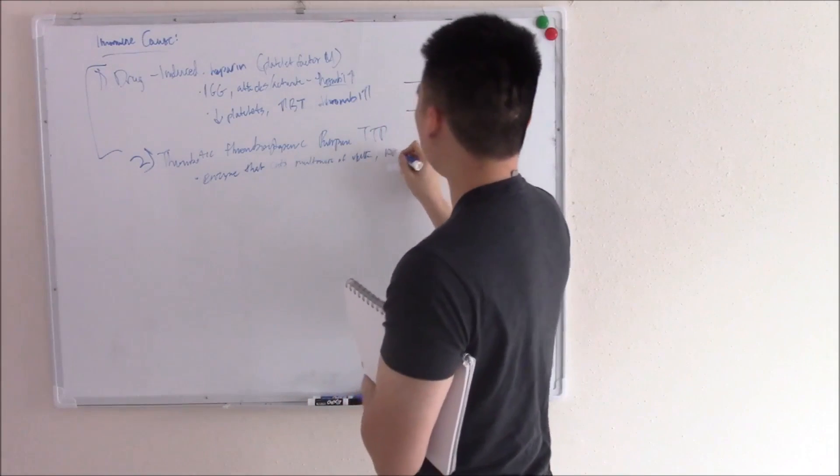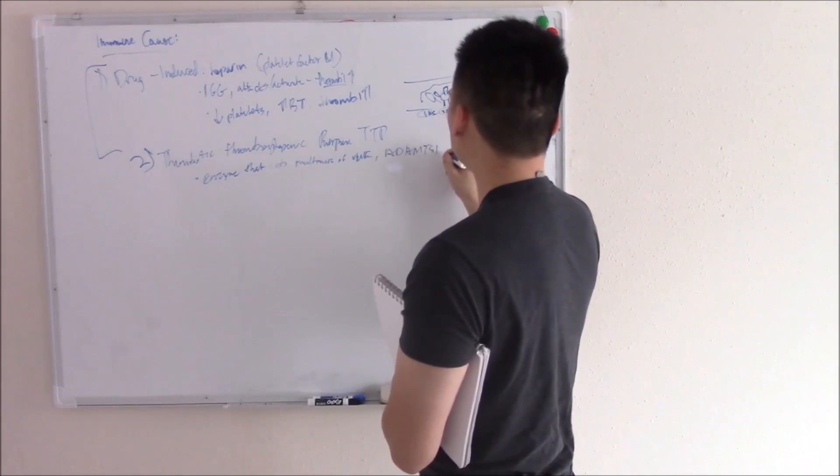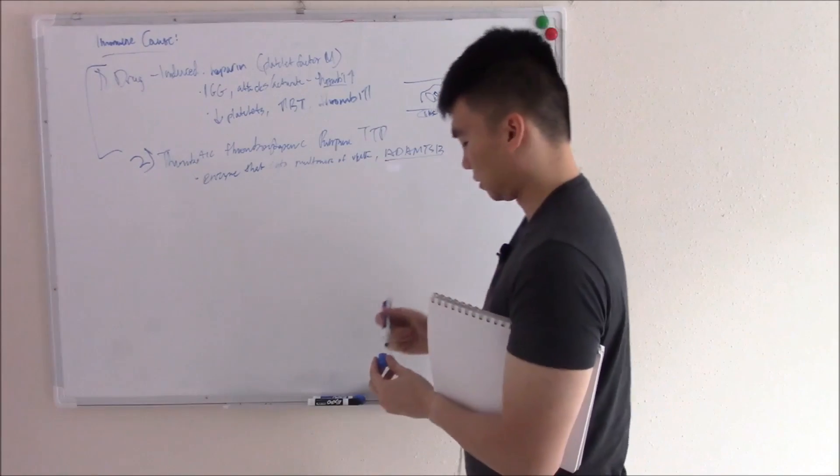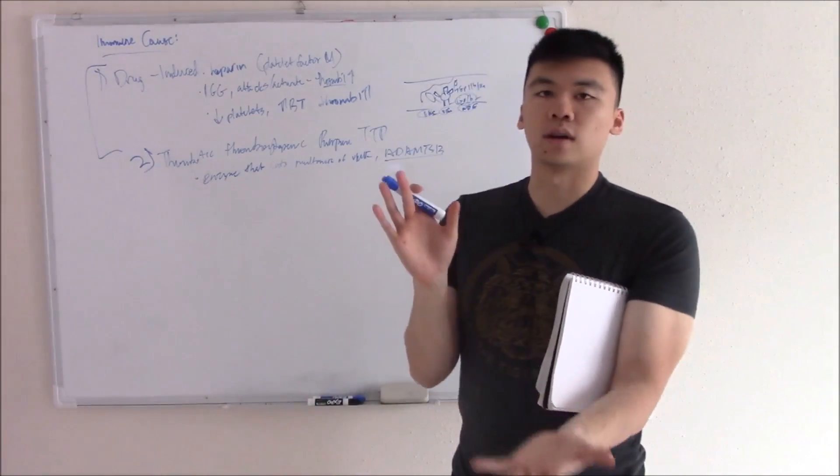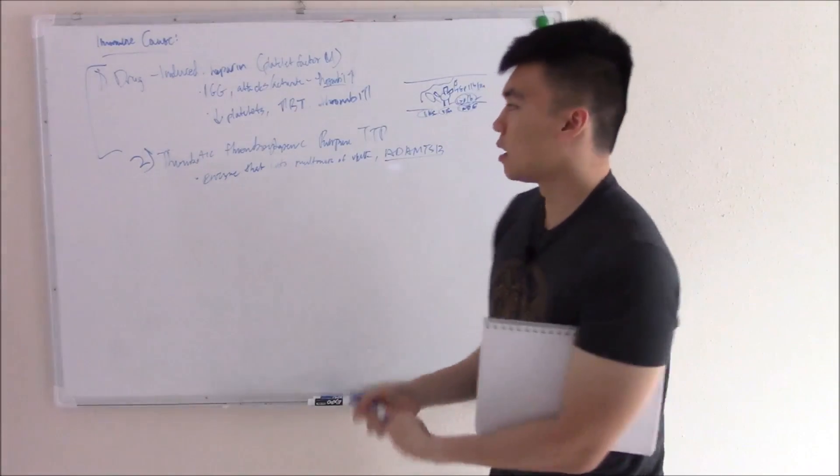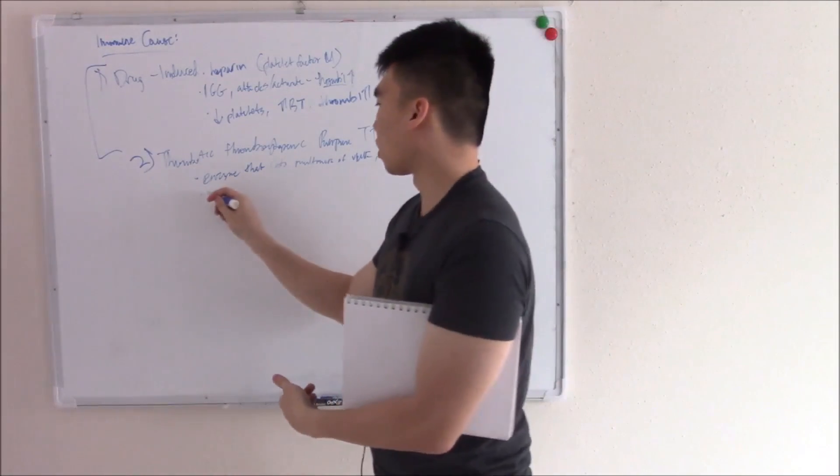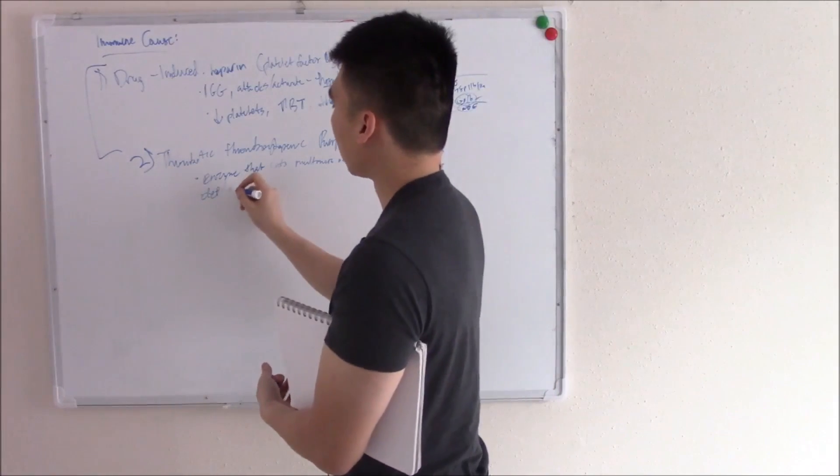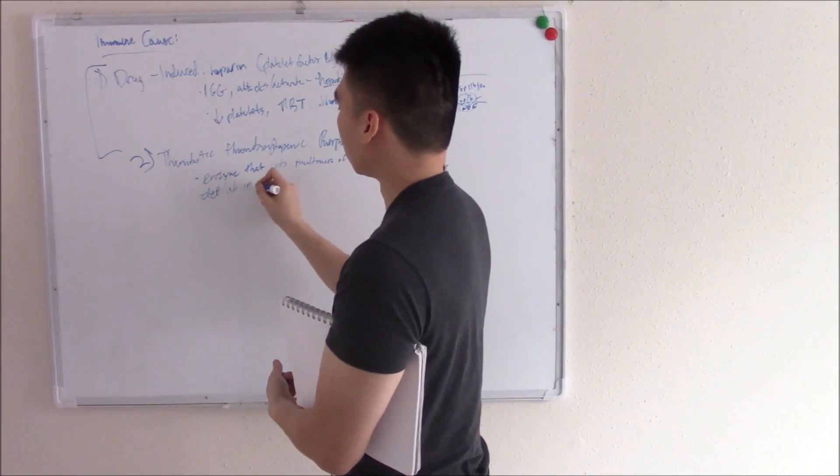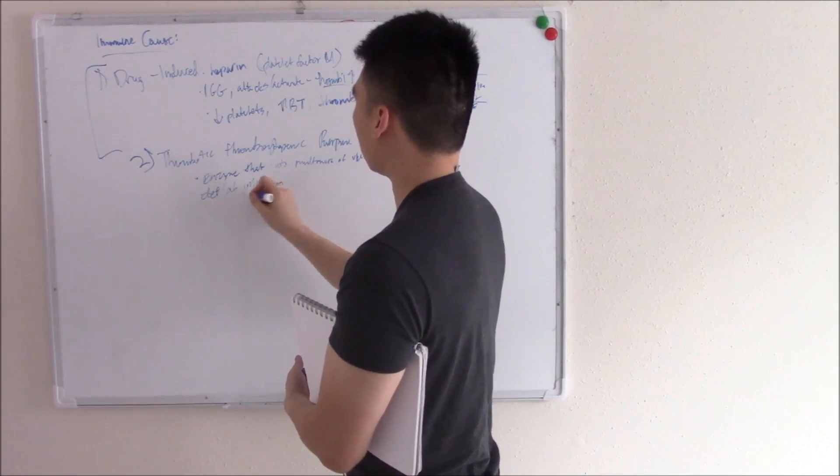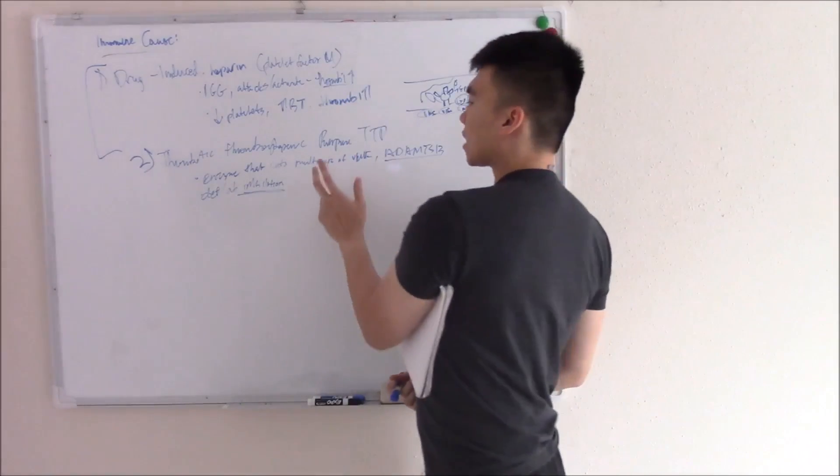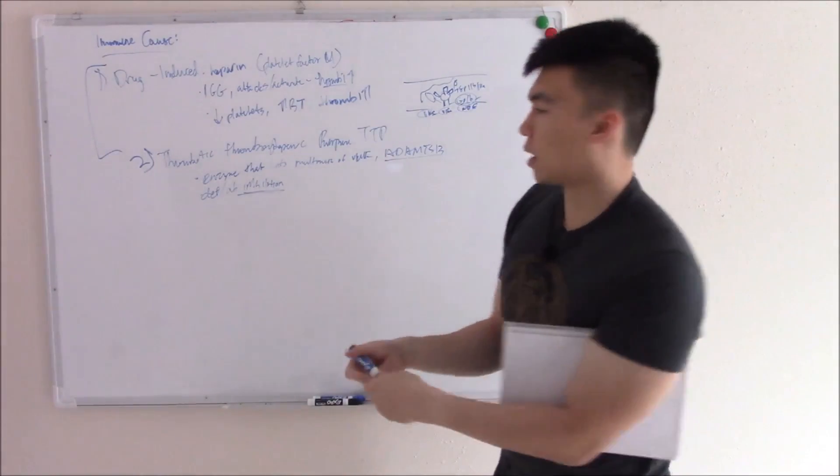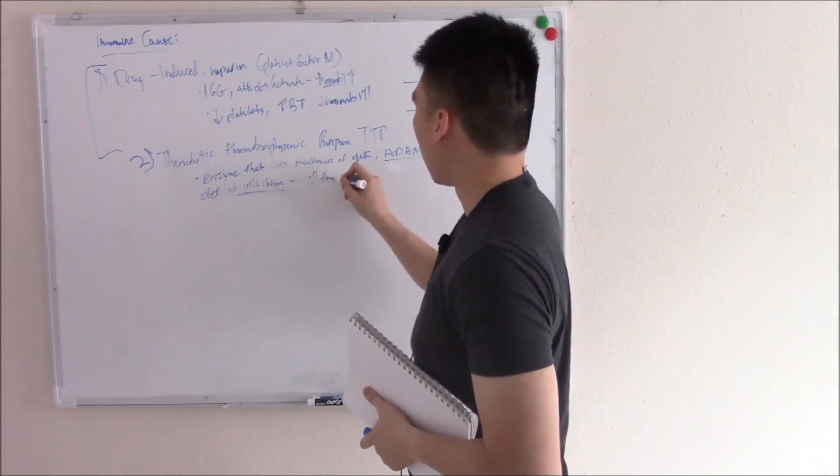We call this ADAMTS13. And this cuts multimers of von Willebrand factor to make sure we don't have too much. And that way we don't have inappropriate thrombi. If you have a deficiency in this or more commonly an autoantibody inhibition of this, so deficiency or autoantibody inhibition, because we are talking about immune causes of thrombocytopenia, then you can't cut the multimers of von Willebrand factor and they'll start to clump and aggregate and cause inappropriate thrombi.